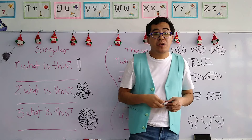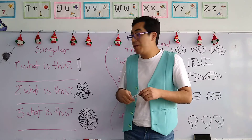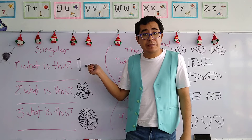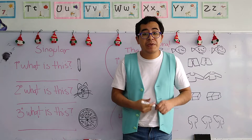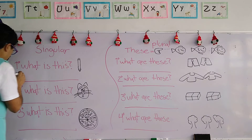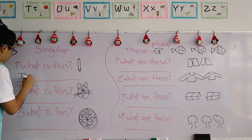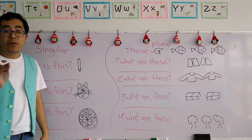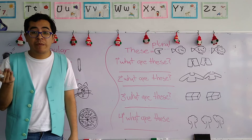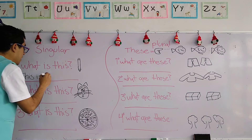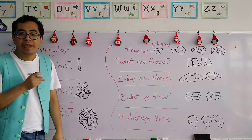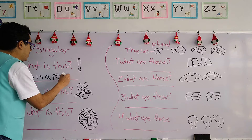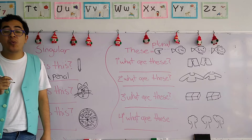So, the first question using 'this' in singular means: 'What is this?' ¿Qué es esto? Remember, when we answer correctly, we have to begin with 'this.' This is — esto es — 'this is a.' Don't forget to write 'a' or 'an,' because we're talking about singular objects.